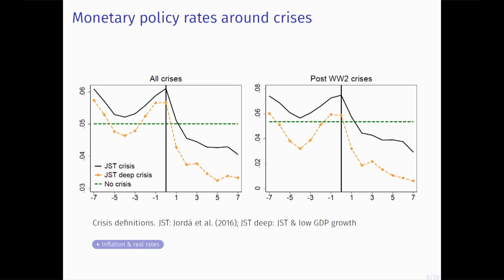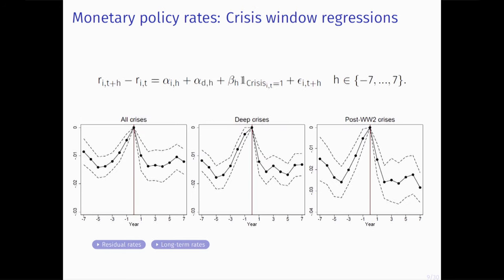The U-shape appears for average crises, with a stronger U-shape for deeper crises and an even stronger one after World War II, especially for deep crises. To add confidence bands, we regress the change in monetary policy rates from seven years before to seven years after the crisis on a crisis dummy with country and decade fixed effects, normalized to zero at the time of the crisis. We again see a U-shape for different types of crises with quite narrow standard errors.